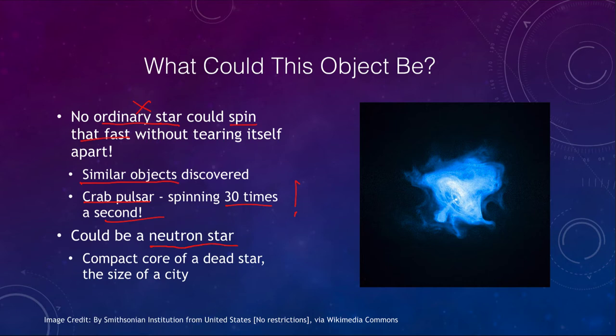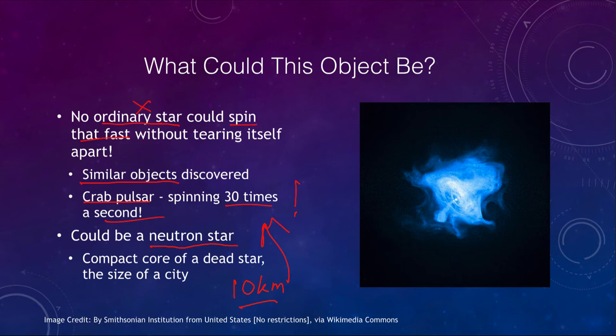The neutron star is the compact core of the dead star, maybe about the size of a city — only about 10 kilometers across. If it is spinning this fast, the outer layers are approaching a decent fraction of the speed of light. But the neutron star is dense enough that it can actually hold up to the forces that would try to rip it apart, so a neutron star could actually survive this.